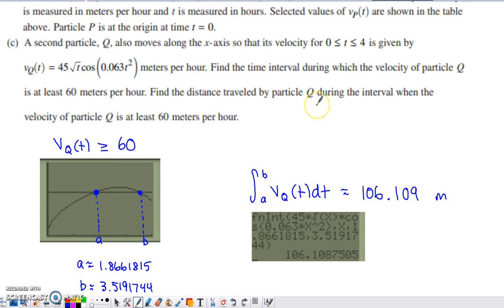I do have another part of this to talk about, and it's to find the distance traveled by particle Q during this interval. I'm going to have to integrate my velocity function to figure out the distance that I've covered across the time frame from 1.866 up until 3.519. I just represented those limits of integration as A and B since I clearly defined A and B over here. I did this integral on the calculator, and I ended up with 106.109 meters as the total distance traveled from time A to time B. One thing you don't have to worry about here is absolute values around your velocity function. When you're doing a total distance calculation, you would need to worry about that, but this velocity function is above 60 for that entire stretch, so it's clearly above 0.